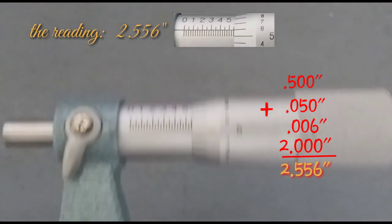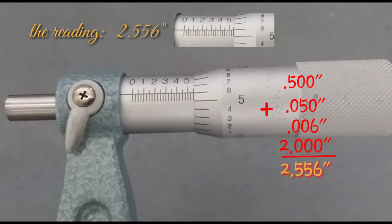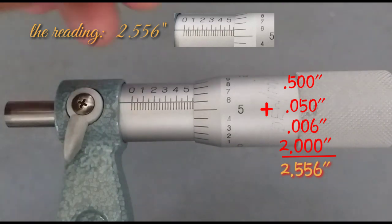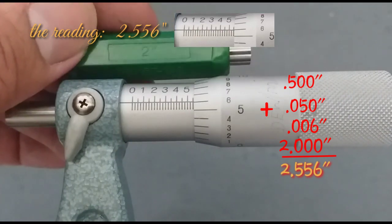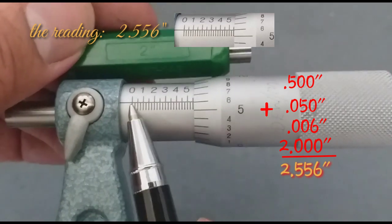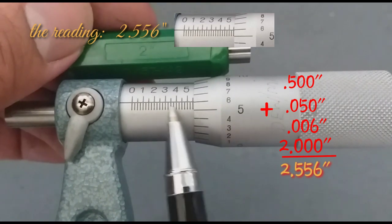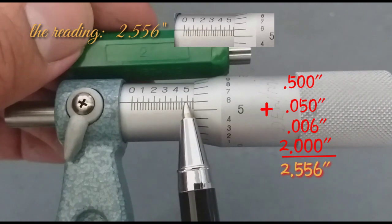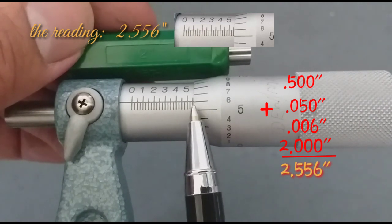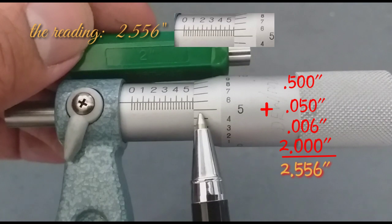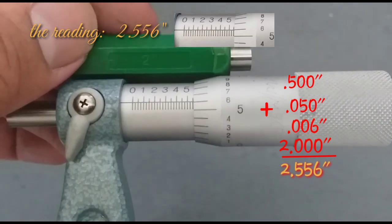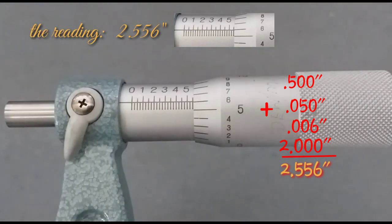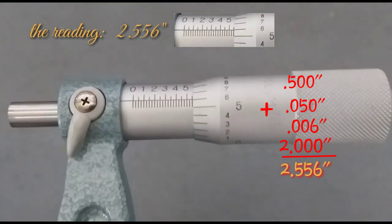Plus our standard bar that is 2 inches, bringing the total to 2.556 thousandths of an inch. This is the micrometer standard bar 2 inches: 0, point 1, point 2, point 3, point 4, point 5, plus 50, plus 6, then 2 inches total is 2.556 thousandths of an inch.